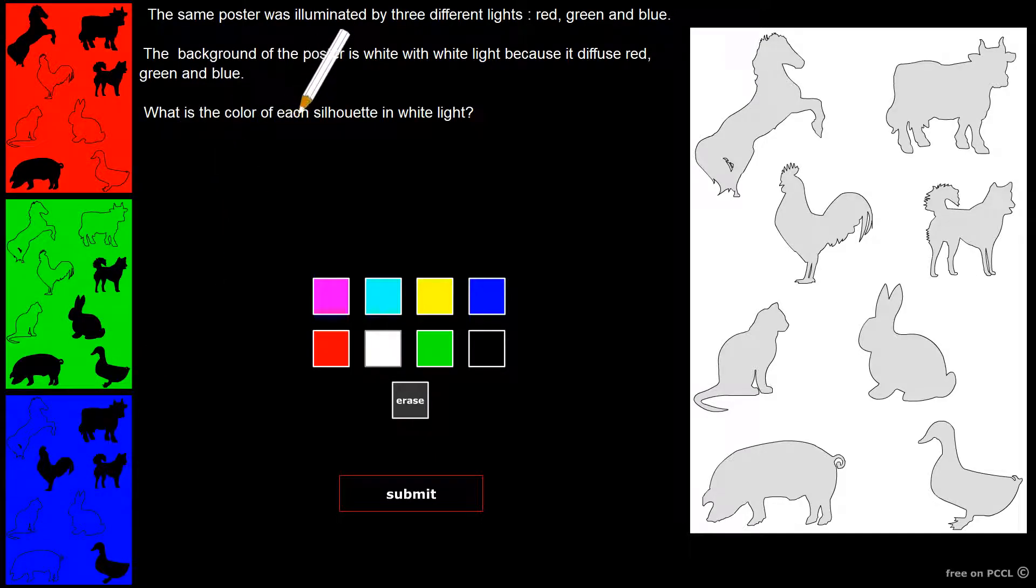The question asked is, what will be the colors of animals in white light? That is to say if the three colors, red, green, blue, are activated at the same time.